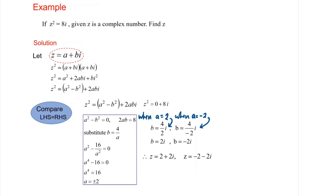If z² = 8i, given z is a complex number, find z. The important information is that z is a complex number. So we must let z = a + bi, and then proceed with the following steps to solve.